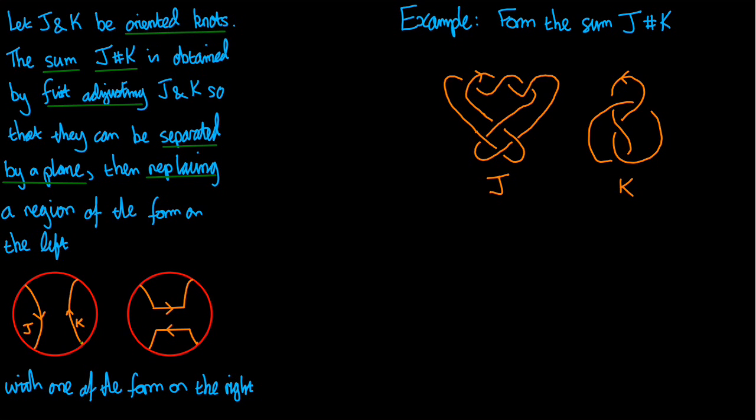And then what I do is I replace that with the following little bridge where I travel down J across to K, around K, back across to J and then around J. So I find a place where J and K pass each other by and then I replace it with this bridge.